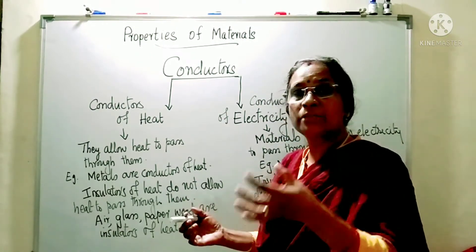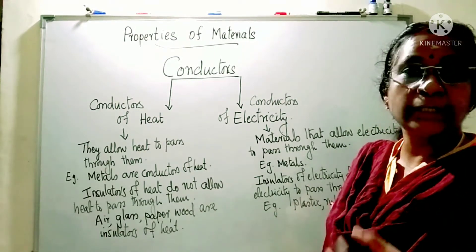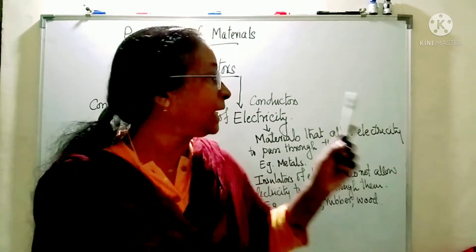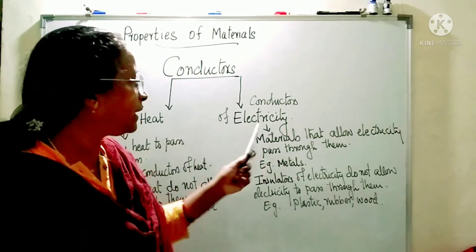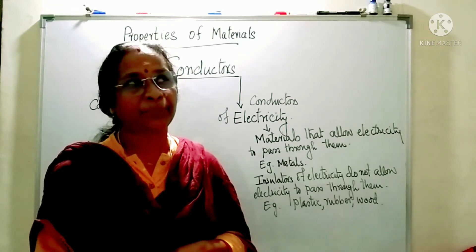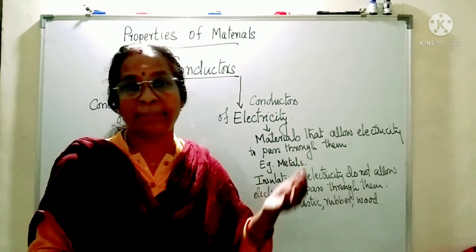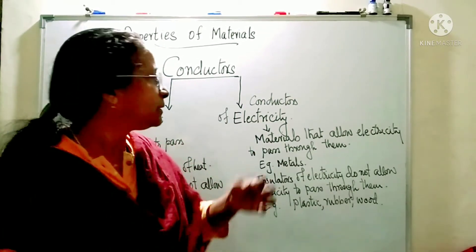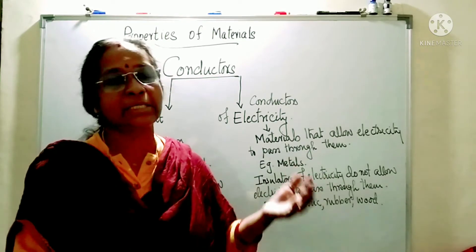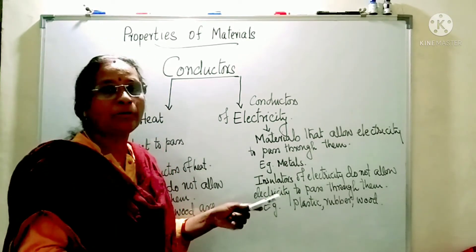Insulators of heat are materials which do not allow heat to pass through them — for example, air, glass, paper, and wood. Similarly, there are conductors of electricity, which allow electricity to pass through them. Almost all metals are good conductors of electricity, but depending on the nature of the metal, the rate of electricity passing through them — the conductivity — will vary. Insulators of electricity do not allow electricity to pass through them. Examples include plastic, rubber, and wood.